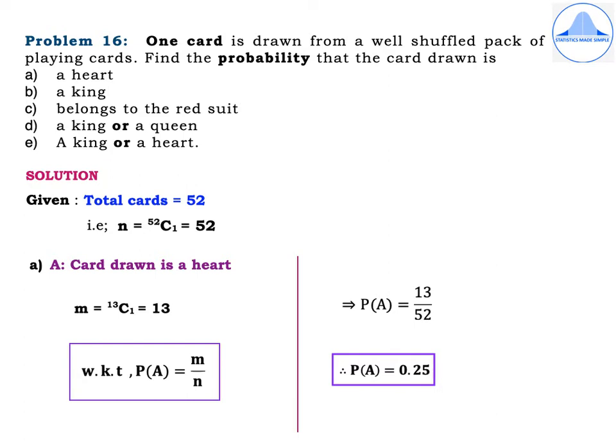Problem 16: One card is drawn from a well-shuffled pack of playing cards. Find the probability that the card drawn is: (a) a heart, (b) a king, (c) belongs to the red suit, (d) a king or a queen, (e) a king or a heart. Given total cards = 52, so n = 52C1 = 52.